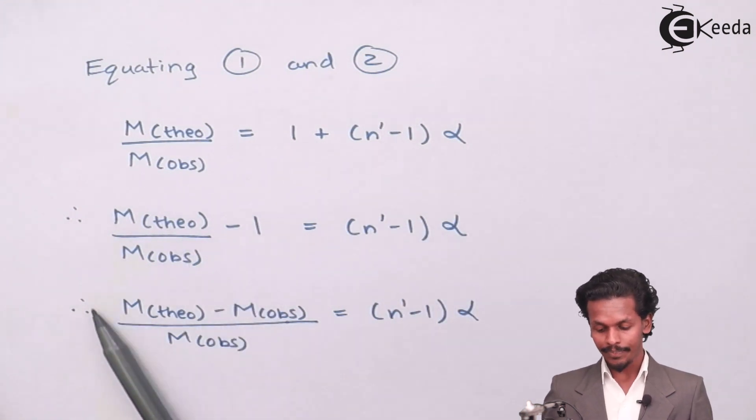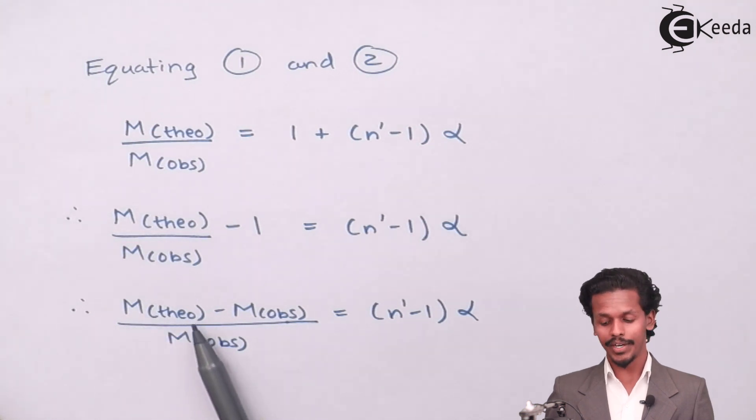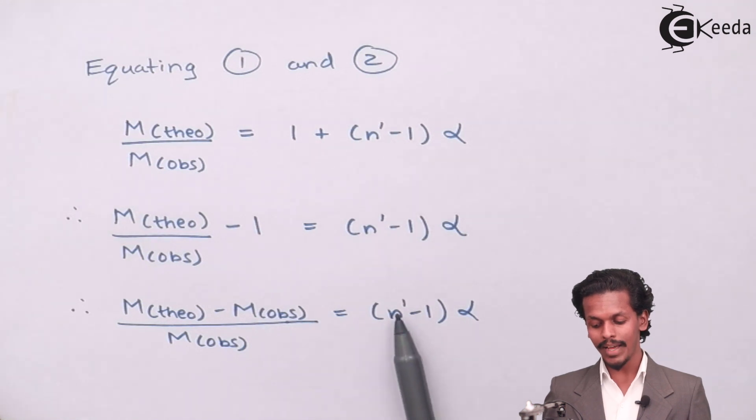So by this equating we will get M theoretical minus M observed divided by M observed equals n bar minus 1 alpha.